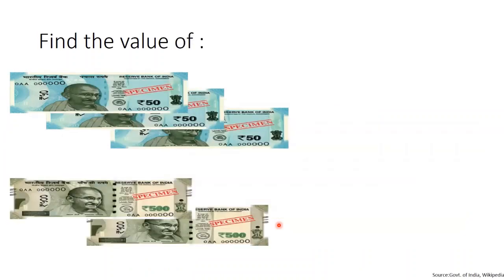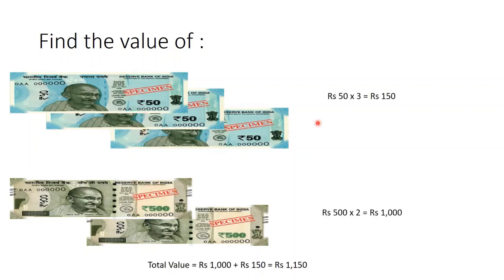Here, to find the total value, let's find the total value of 50 rupee notes and then the total value of 500 rupee notes and add them to get the final total value. Value of 50 rupee notes is 3 into rupees 50, which is rupees 150. Value of 500 rupee notes is 2 into rupees 500, which is rupees 1000. When we add these, the total value is rupees 1150.